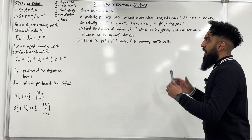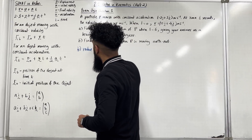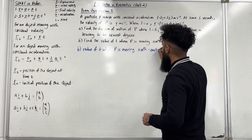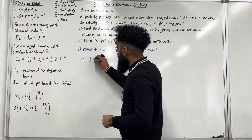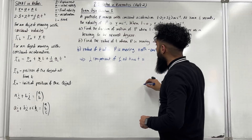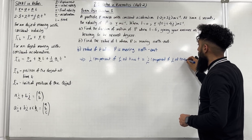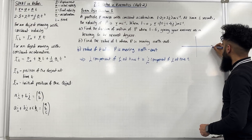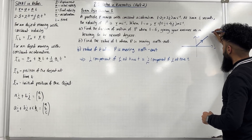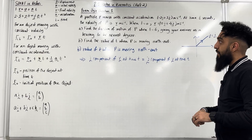For part B, we want to find the value of T when P is moving northeast. Moving northeast implies that the i component of V at time T must equal the j component of V at time T. On the coordinate grid, northeast is the direction where J = I.